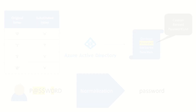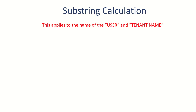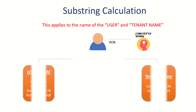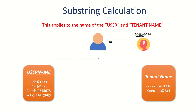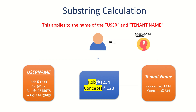The next process is substring calculation, where a checksum is applied to the user's name as well as the tenant name. For example, if a user named Rob who works for Contoso tries to reset the password using his own name or the tenant name, both requests will be blocked because these are common names or terms directly related to the user or the company.